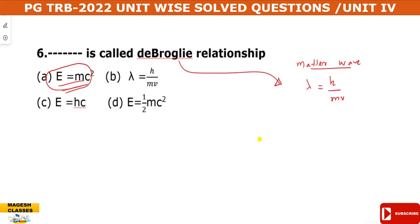The particle nature relates to the De Broglie equation. The wave property is the main concept here. The answer is option B — the De Broglie relationship explains matter waves using both wave and particle properties.